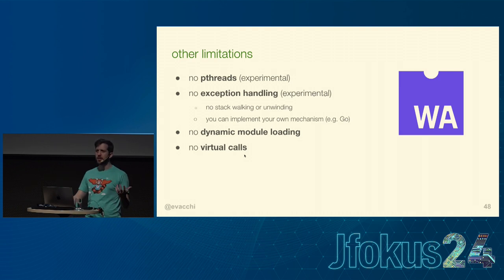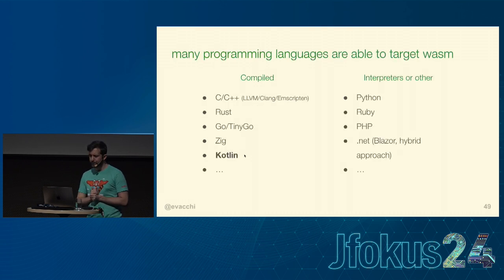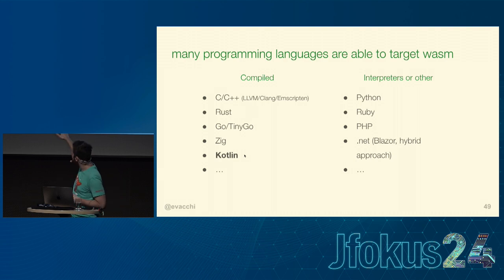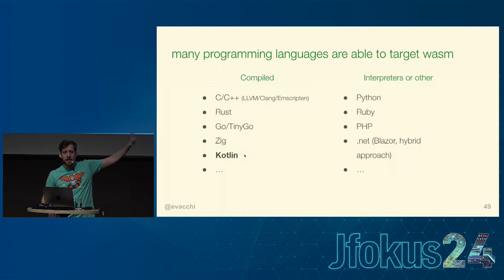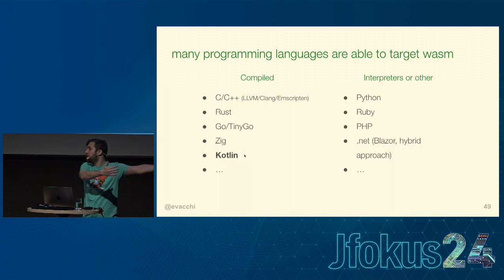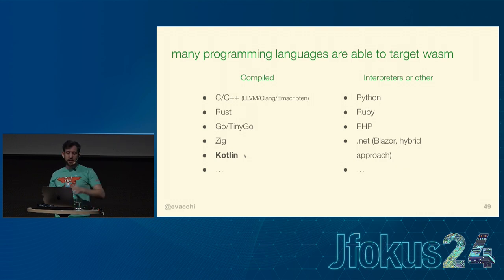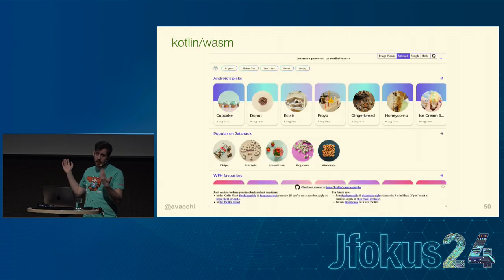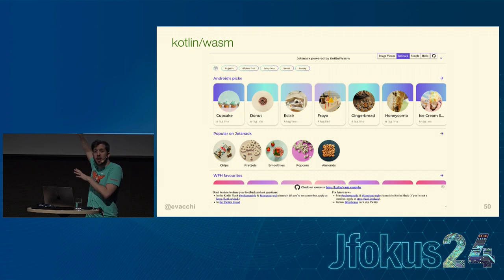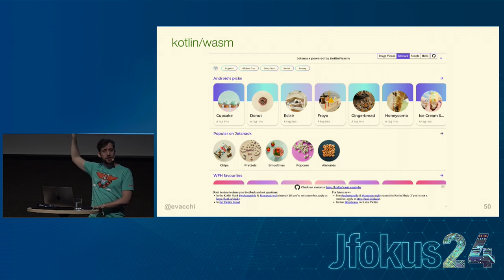Many programming languages are already able to target WebAssembly — already mentioned Kotlin, but there are many others: Go, Rust, C++, Zig. For the compiled part, there are also languages that have ported their interpreter to run on top of WebAssembly, such as Python and Ruby. .NET has a sort of hybrid approach with a framework called Blazor, which is pretty cool. Kotlin, through its Wasm GC support, is able to run in the browser supporting fairly complicated applications. This is JetBrains Compose running in the browser through Kotlin over WebAssembly, which is pretty cool. So as I mentioned, we can support multiple languages — it's polyglot.